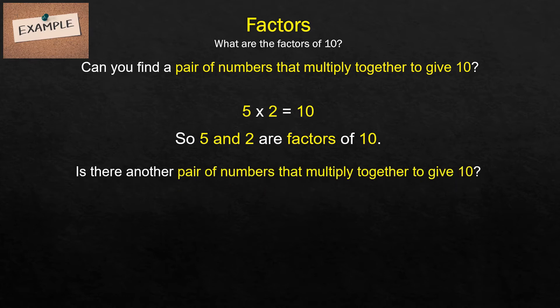Is there any another pair of numbers that multiply together to give 10? What do you think? Yes, 1 and 10, because 1 times 10 is equal to 10. So 1 and 10 are also factors of 10.